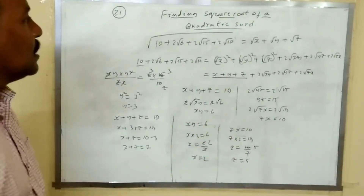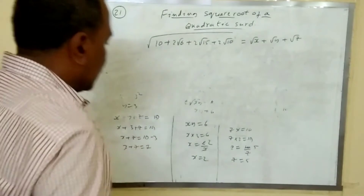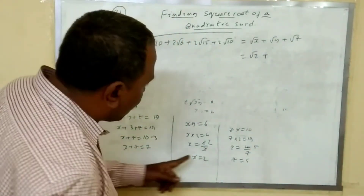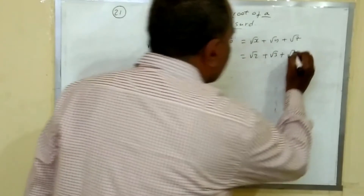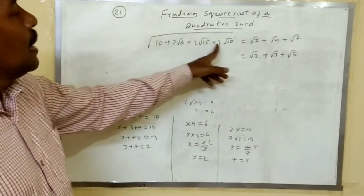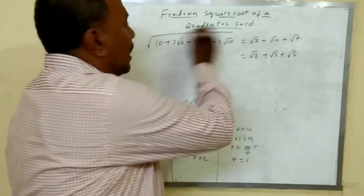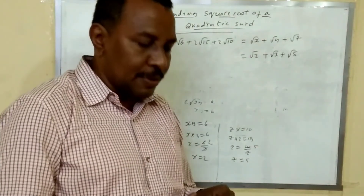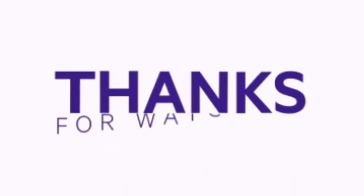So we have x equals 2, y equals 3, z equals 5. Therefore the square root of 10 plus 2 root 6 plus 2 root 15 plus 2 root 10 equals root 2 plus root 3 plus root 5. This is how we find the square root of a quadratic surd. Thank you very much. Please subscribe to Preventive Tutorials.